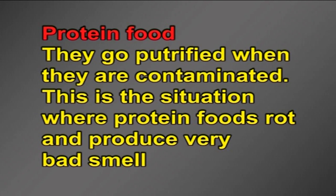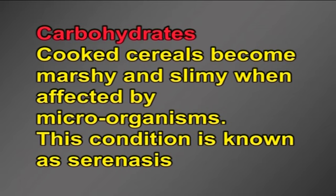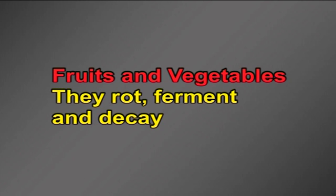Effective spoilage on various food products: Protein foods go putrefied when contaminated — this is the situation where protein foods rot and produce a very bad smell. Carbohydrates: cooked cereals become marshy and slimy when affected by microorganisms, a condition known as serenasis. Flour products smell and taste unpleasant when spoiled and are described as stale. Fruits and vegetables rot, ferment and decay.